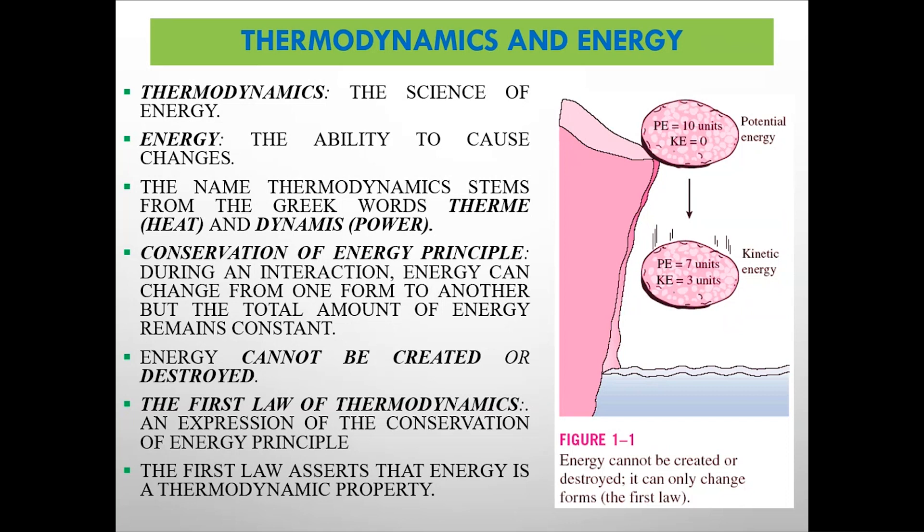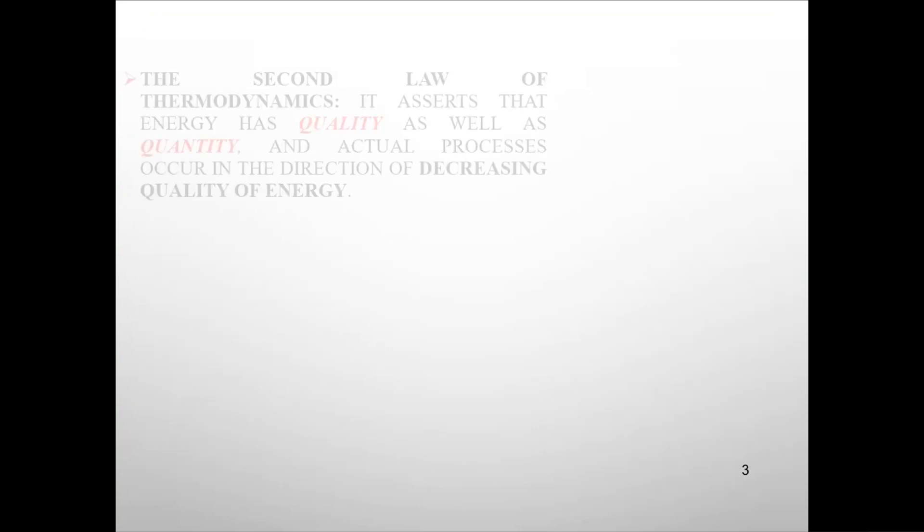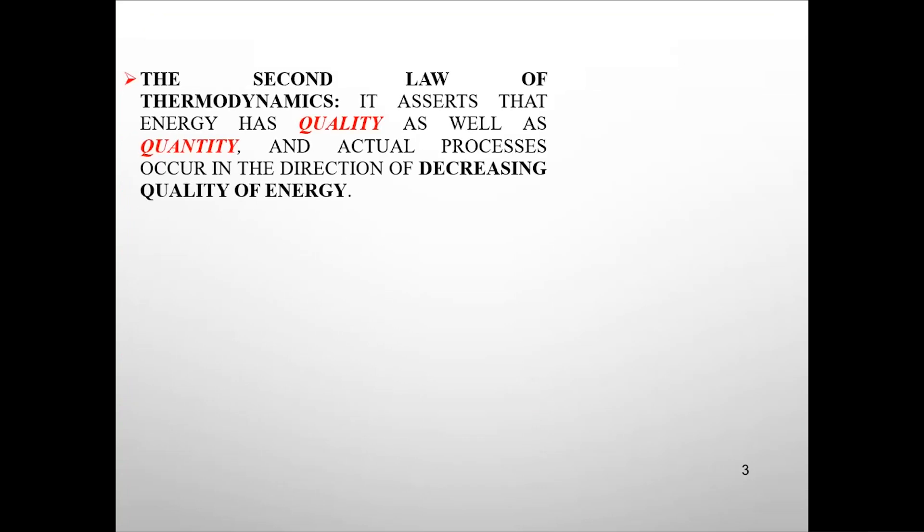The second law says that energy would always transfer in a form such that the quality of energy decreases. Higher temperature pe zyada quality hai, lower temperature pe kam quality hai, aur transfer jab bhi hoga, quality decrease hogi. Energy has quality as well as quantity, and actual process occurs in the direction of decreasing quality of energy. Process ke liye sirf energy ka available hona zaroori nahi hai, uske saath saath us process mein energy ki quality ka decrease hona zaroori hai.